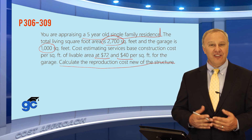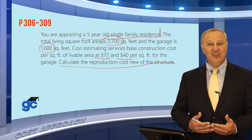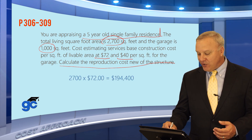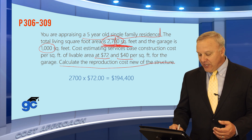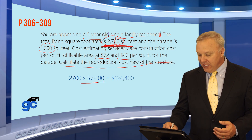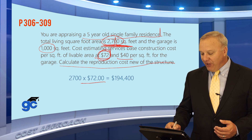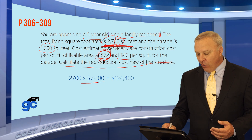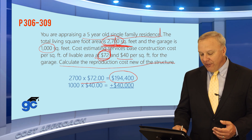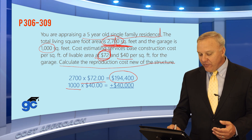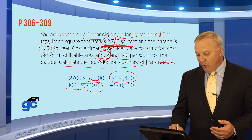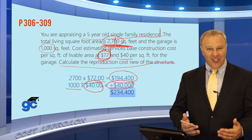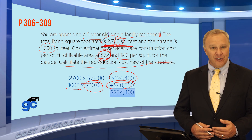You're not asked to do anything with depreciation, so don't worry about how old the building is. All you need to do is figure out the reproduction cost. There are 2,700 square feet of living area times $72, so the cost for the living area to reproduce it today would be $194,400. The garage is 1,000 square feet at $40 a foot, so 1,000 times $40 equals $40,000. Adding those two together, the reproduction cost on this property today is $234,400.